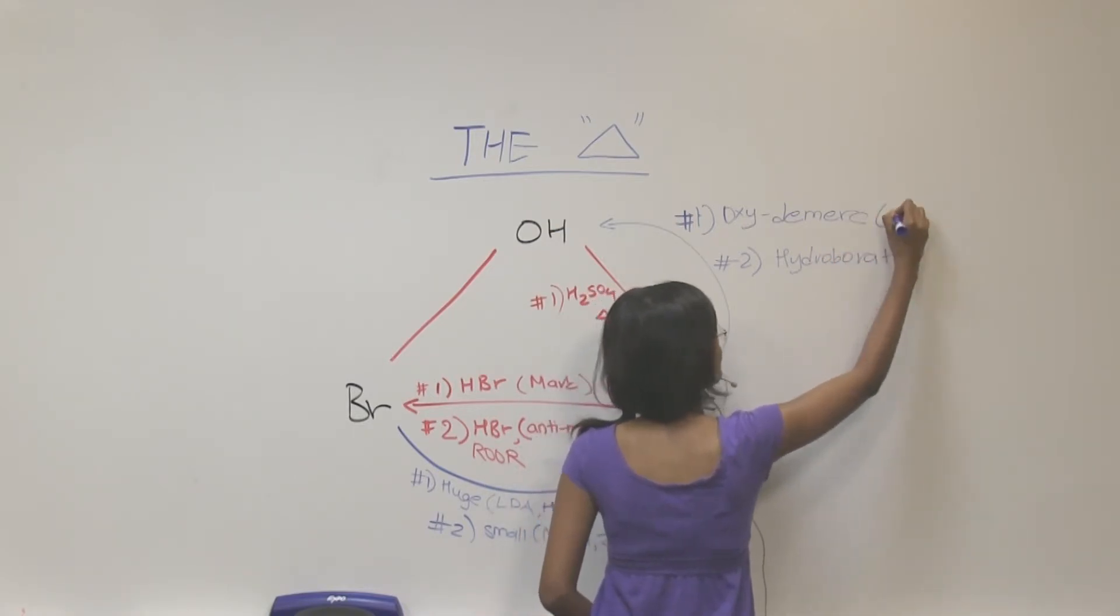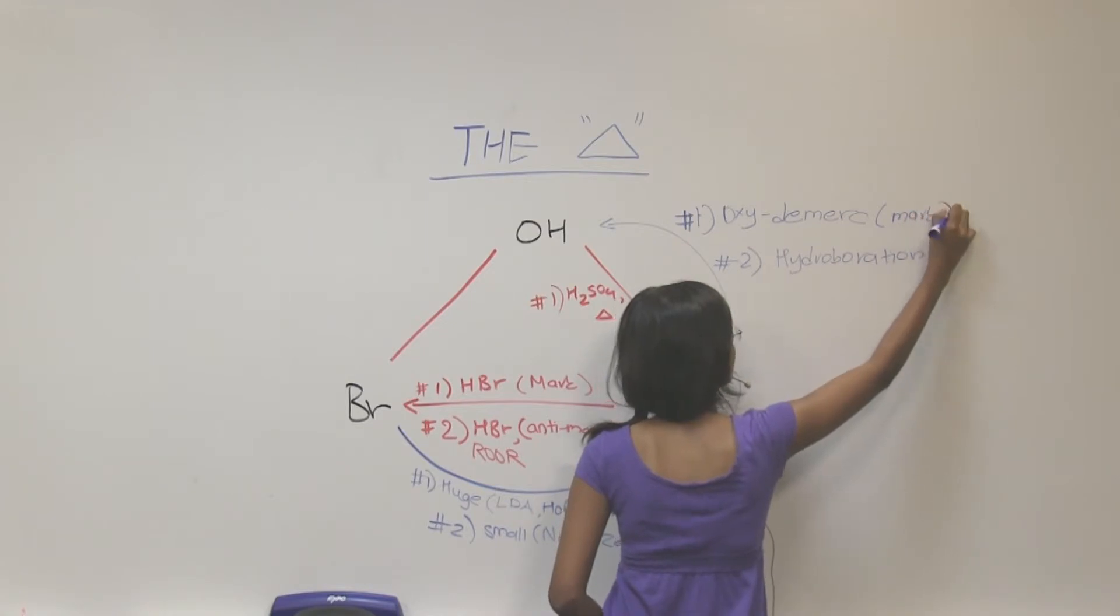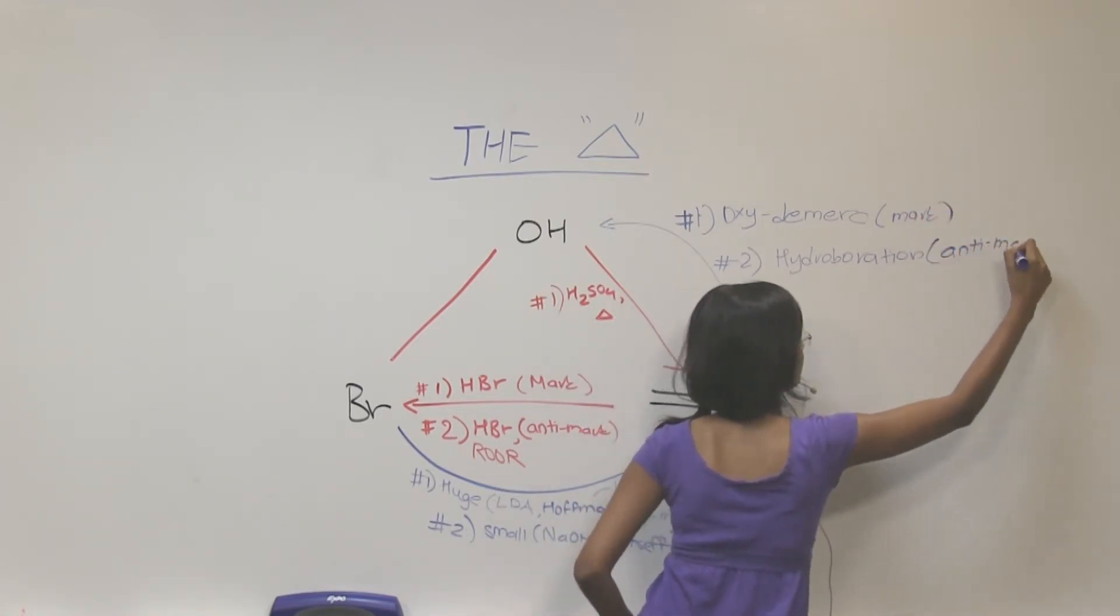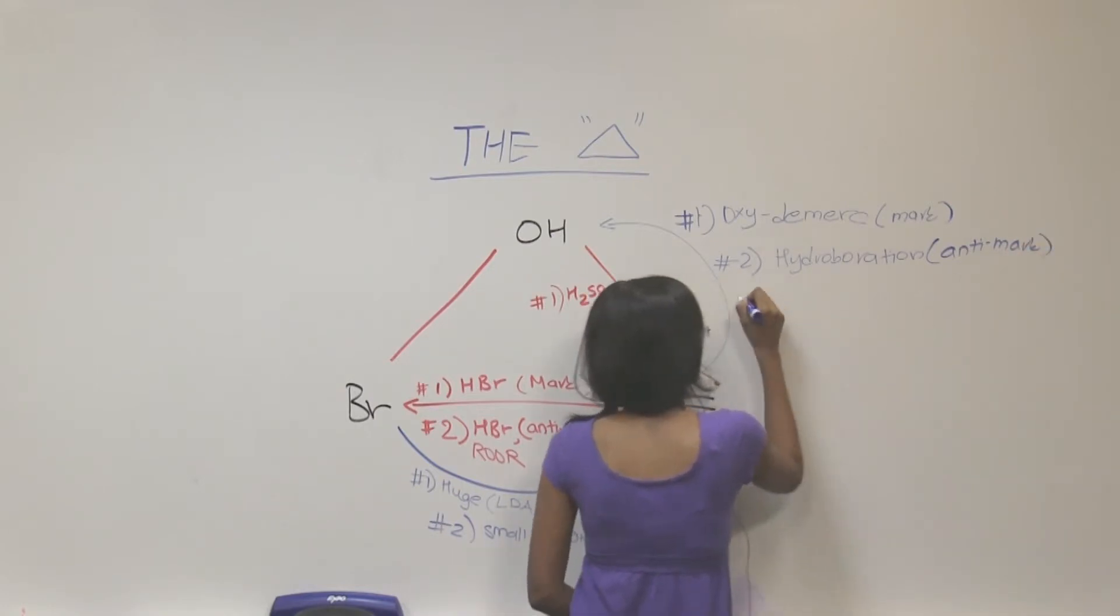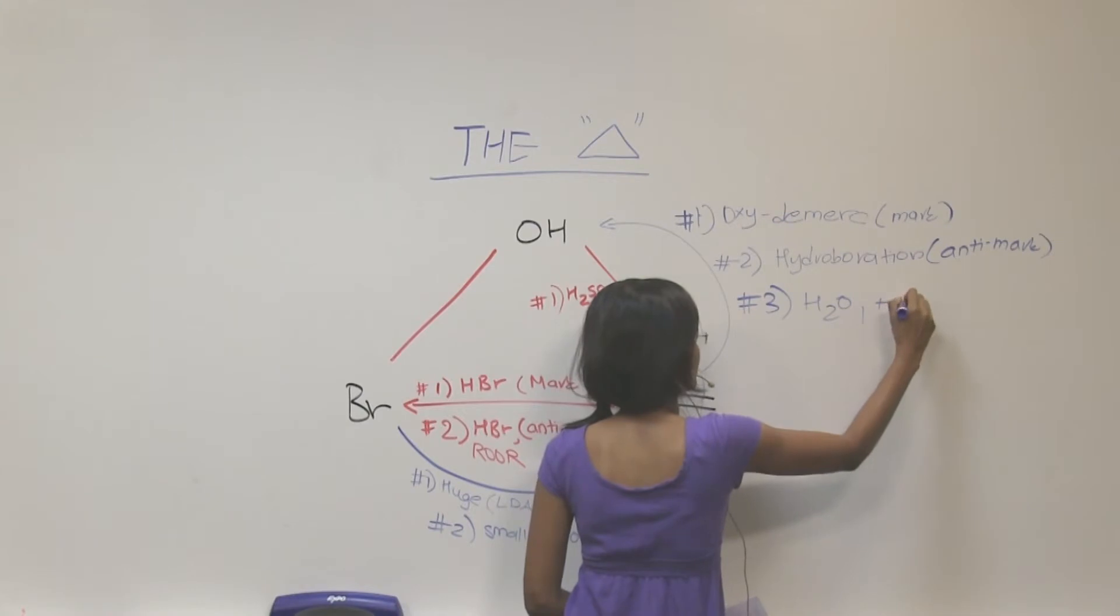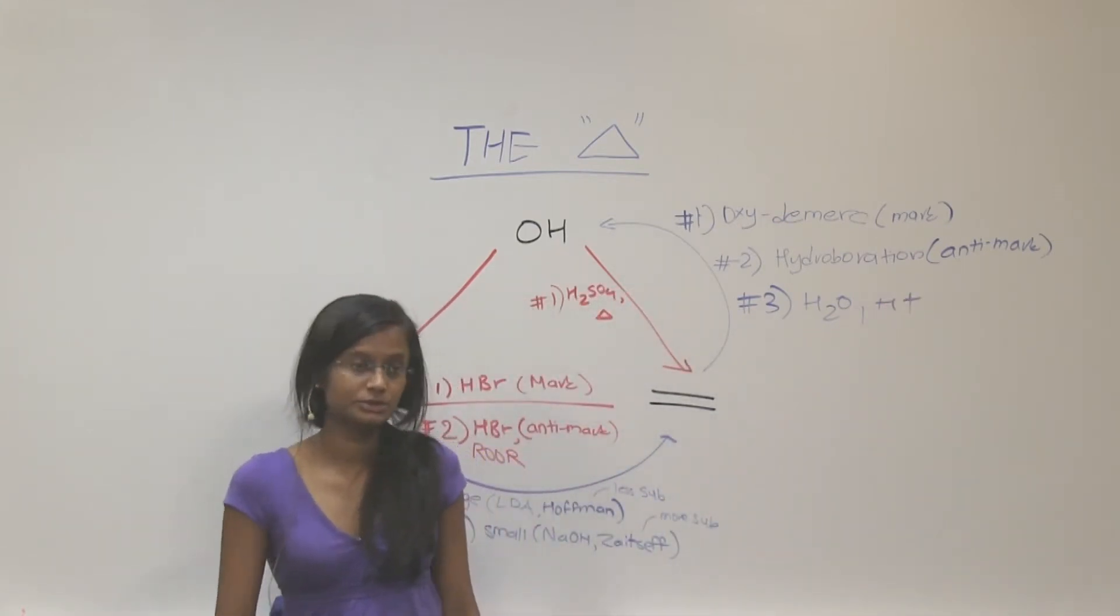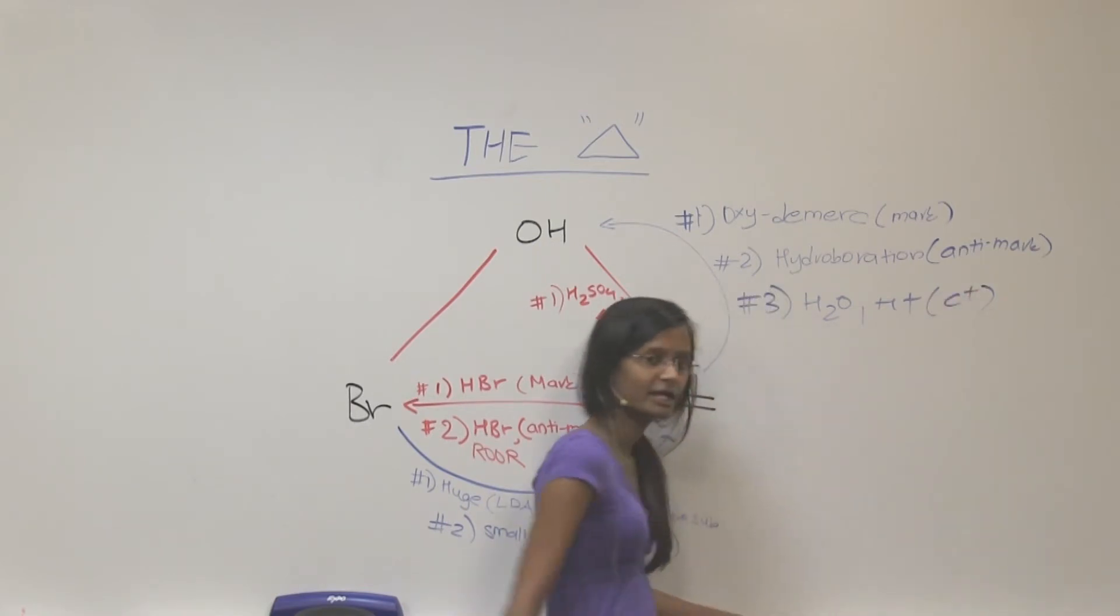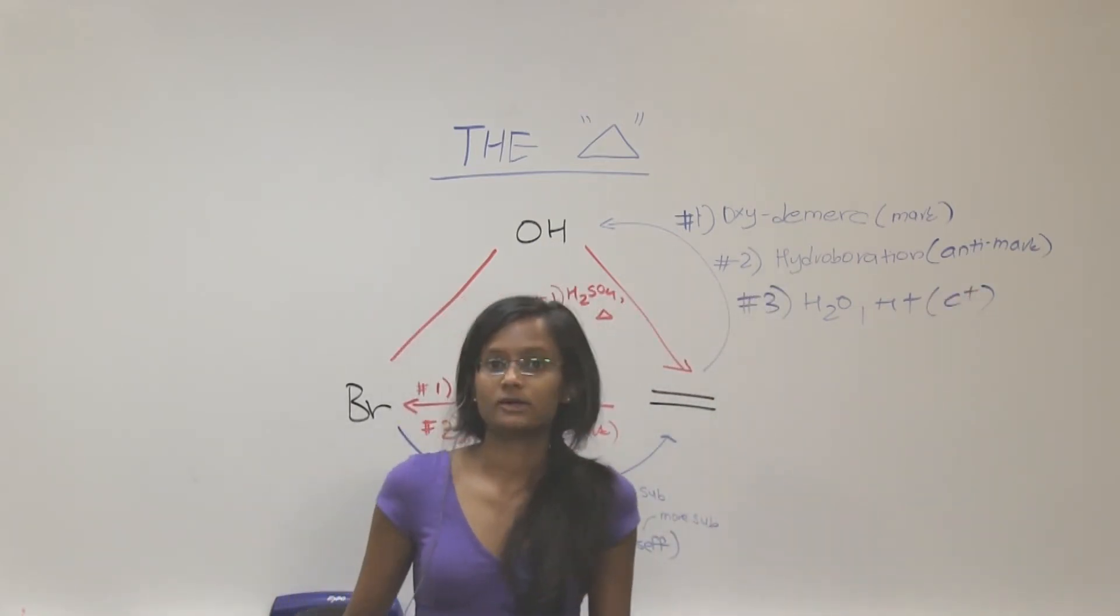So this adds Markovnikov. Hydroboration is anti-Markovnikov. And the third and last way is water with H+. That will get you to alcohol as well. And this is carbocation mechanism. So that's also going to be where it's more stable. So that's going to be Markovnikov as well.